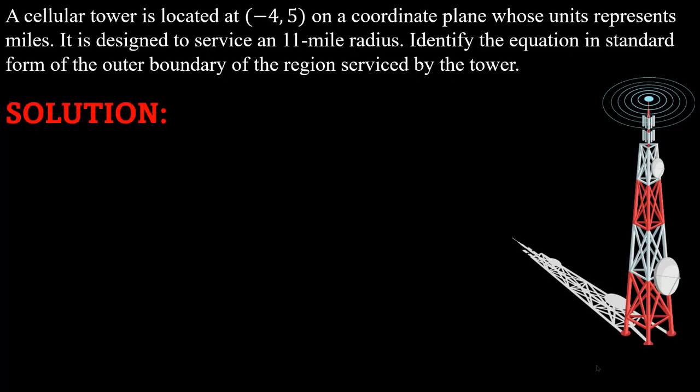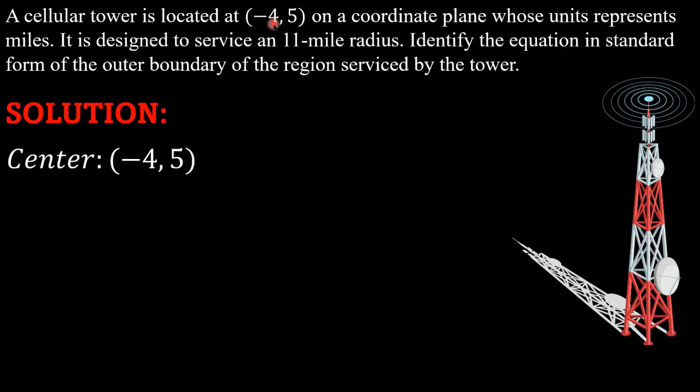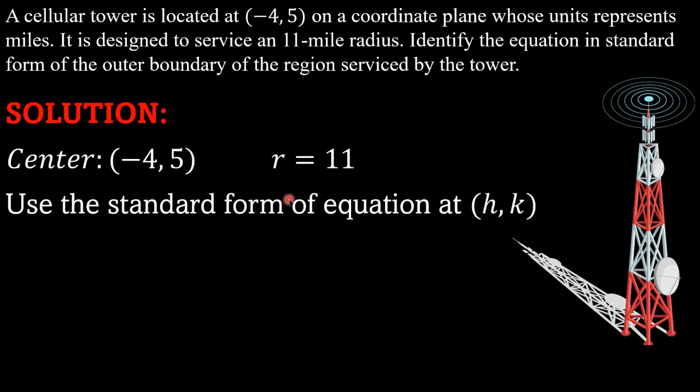Solution: Our center is (-4, 5) and our radius is 11. We are going to use the standard form of equation at (h, k). Why (h, k)? Because it's not at the origin - the center is not (0, 0). That is why we are going to use the standard form of equation at (h, k).